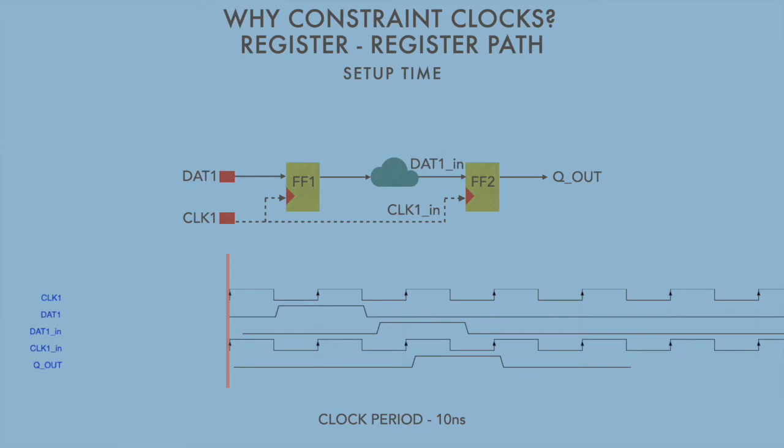Why to constrain clocks? Consider this register to register path where FF1 is the launch flop and FF2 is the capture flop triggered by the same clock. This path is synthesized by constraining clock period to 10 nanoseconds.